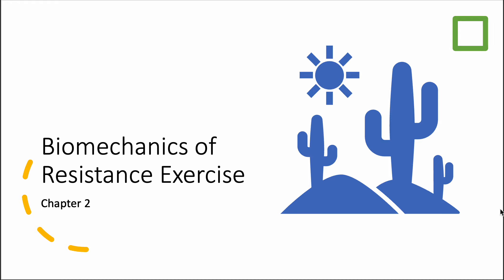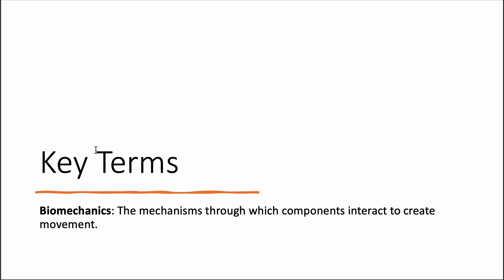Let's dive right into Chapter 2. The first thing we work with is the actual definition: the mechanisms through which components interact to create movement. We're talking about the muscular system and how it reacts to forces. Muscles have to interact with bones, so there's an interaction between the muscular system and the skeletal system, and both must work in coordination with the nervous system to create proper movement patterns.